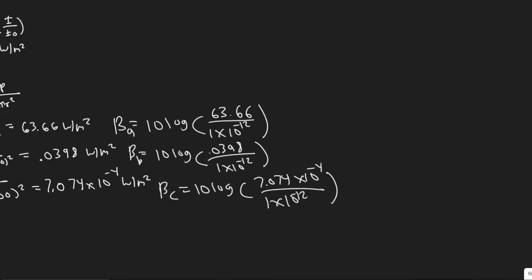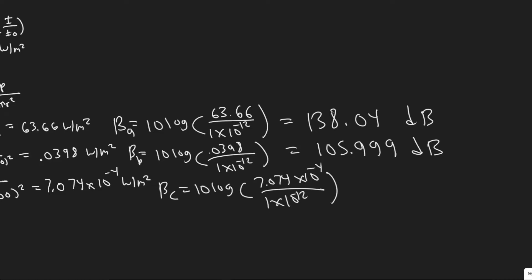This is kind of a plug-and-chug problem. 10 log of 63.66 divided by 1 times 10 to the minus 12 gives 138.04 decibels. 10 log of 0.0398 divided by 1 times 10 to the minus 12 gives 105.999, basically 106 decibels. And 10 log of 7.074 times 10 to the minus 4 divided by 1 times 10 to the minus 12 gives 88.497 decibels.